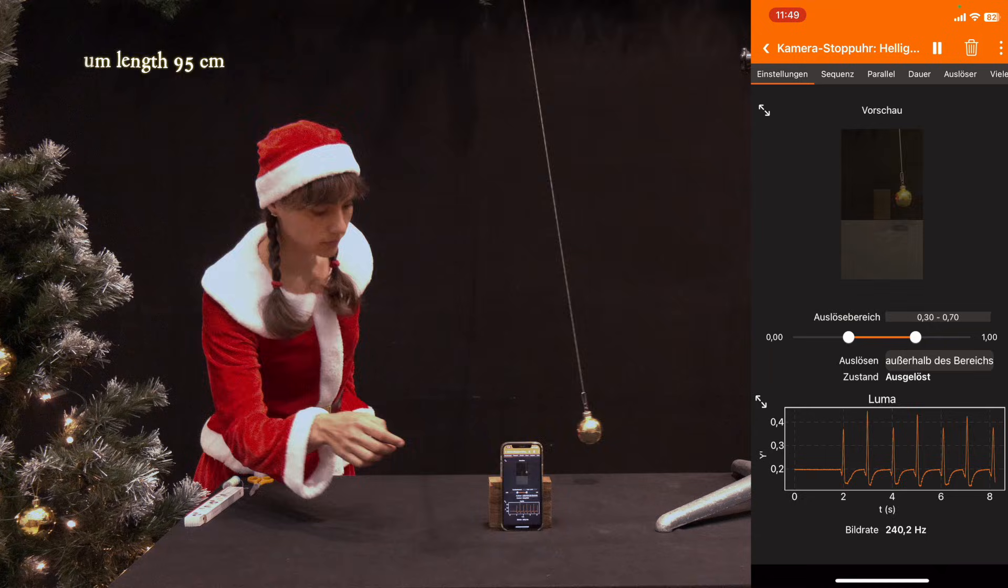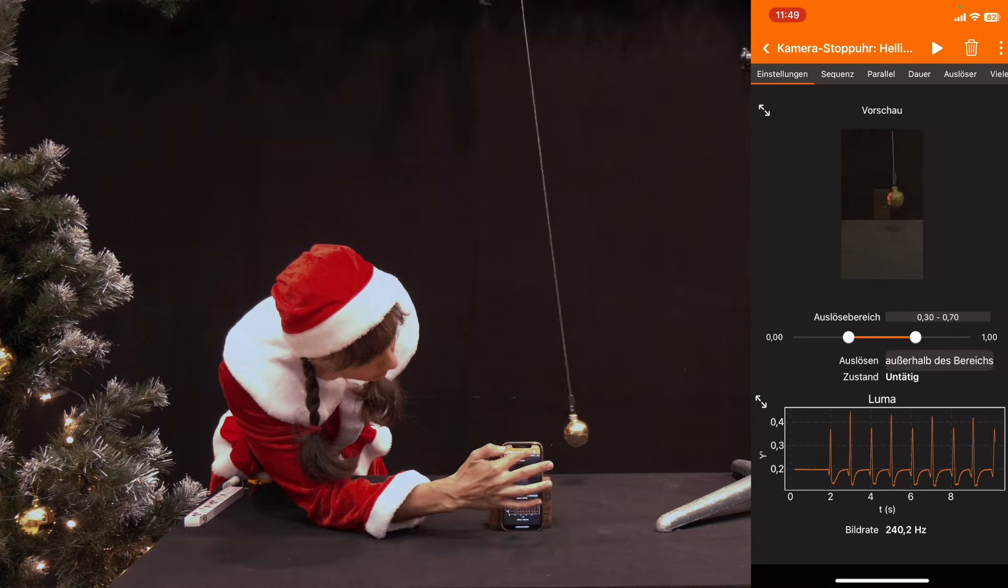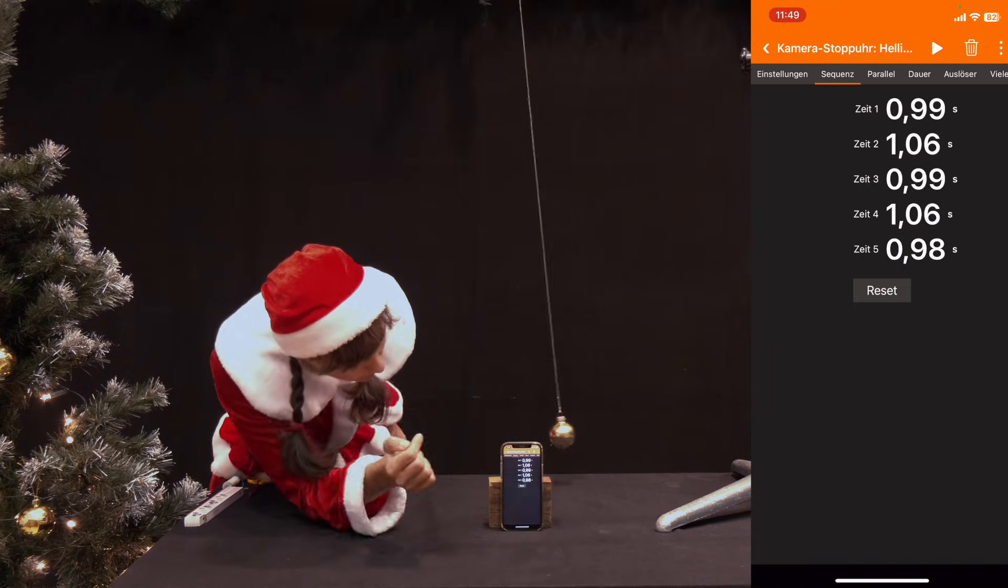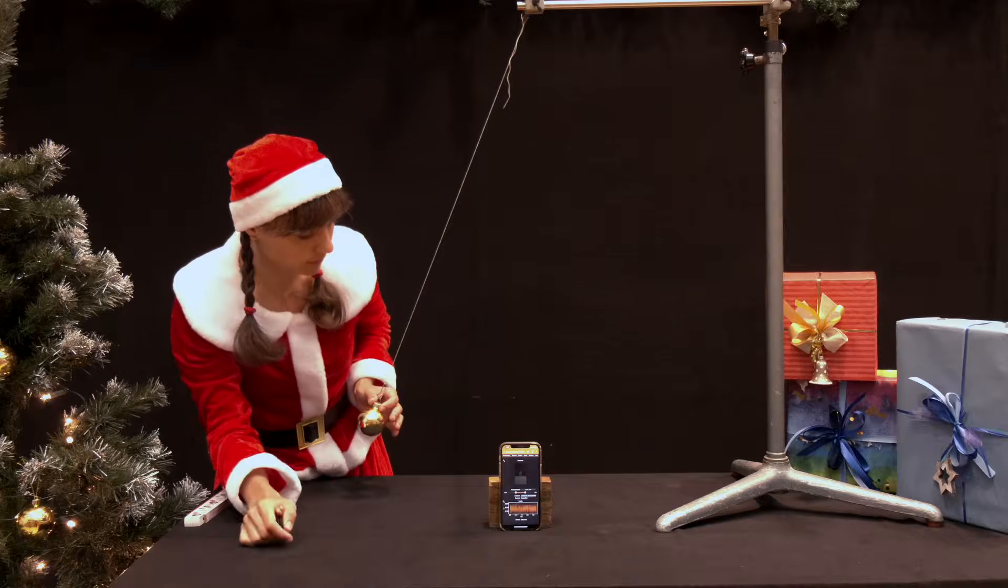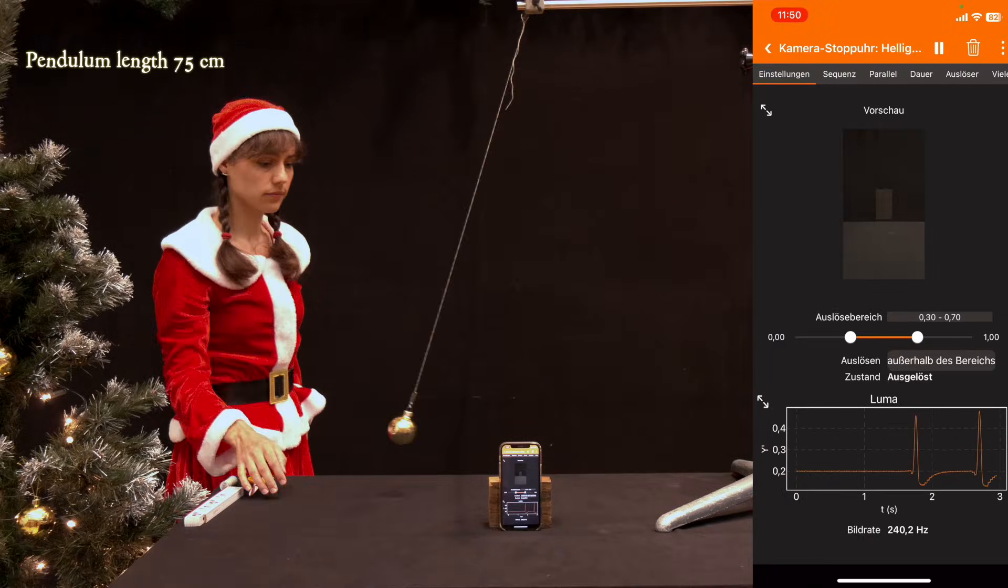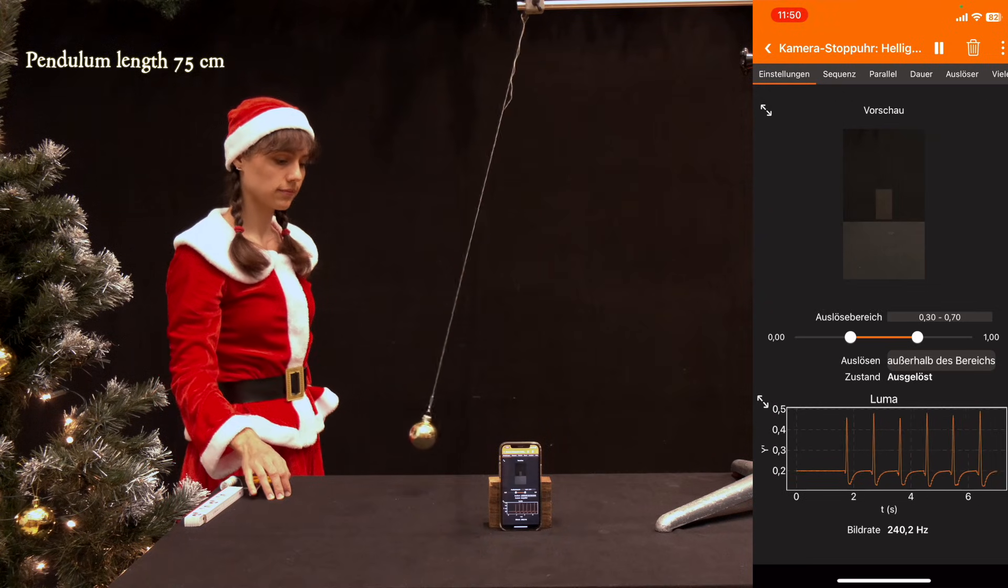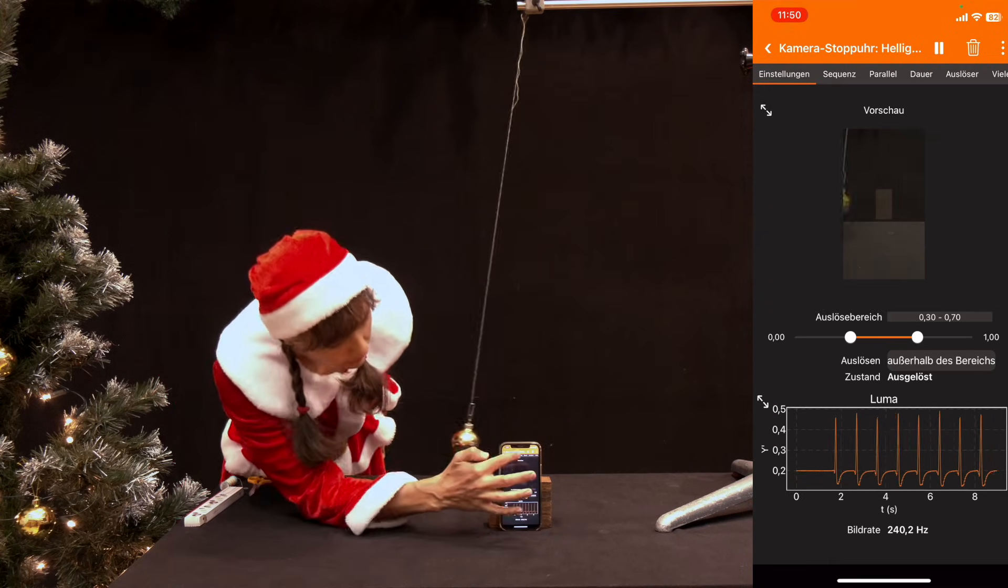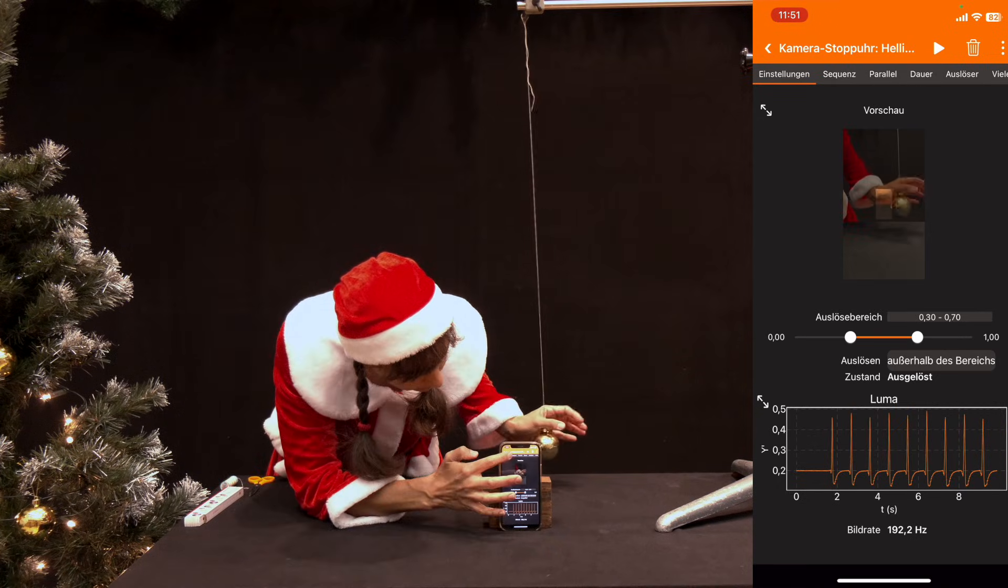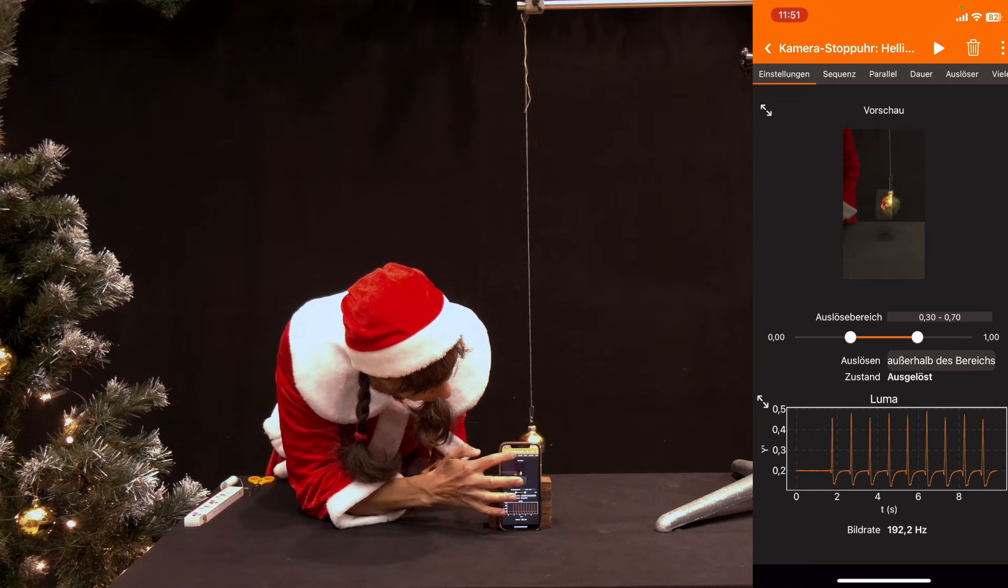The smartphone is positioned so that the Christmas tree bauble swings through the preview image at its lowest point. This is when it is fastest. The setup is very similar to the idealized mathematical pendulum, in which the mass of the pendulum string and the extension of the oscillating object can be neglected if such a pendulum is deflected only slightly.